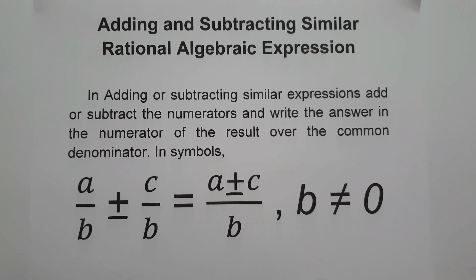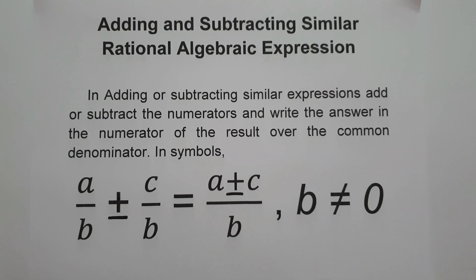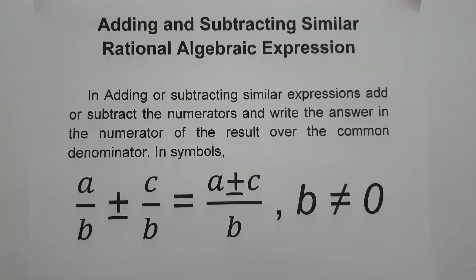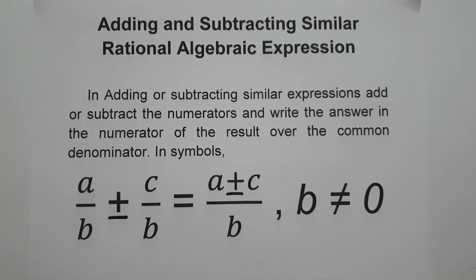For today's video, we are going to talk about how to add and subtract similar rational algebraic expressions. When we say adding and subtracting similar rational algebraic expressions, we are going to add or subtract rational algebraic expressions with the same denominator. Just like in adding and subtracting fractions with the same denominator, we simply copy the denominator and then add or subtract their numerators.